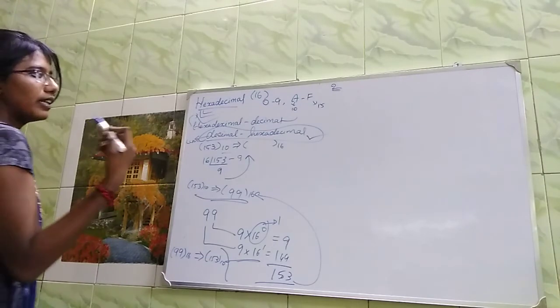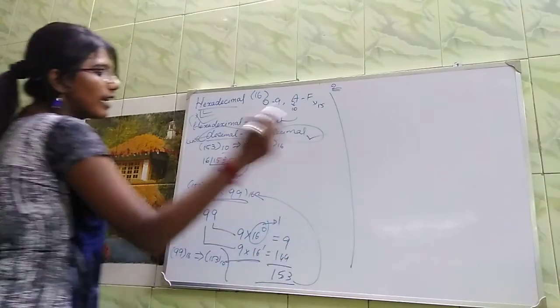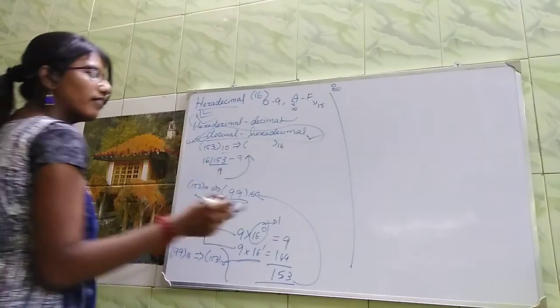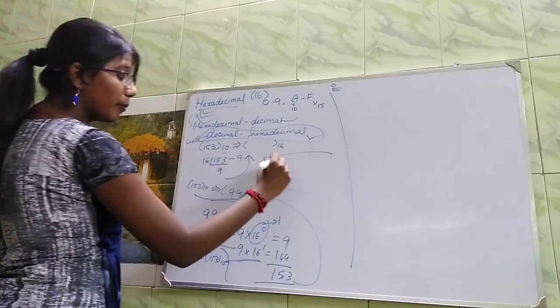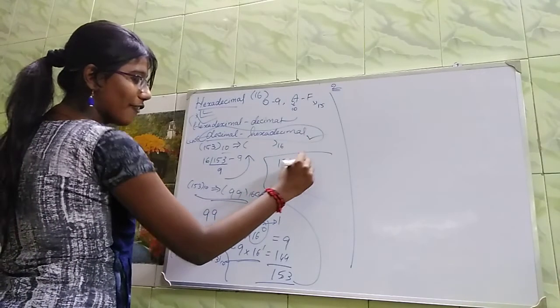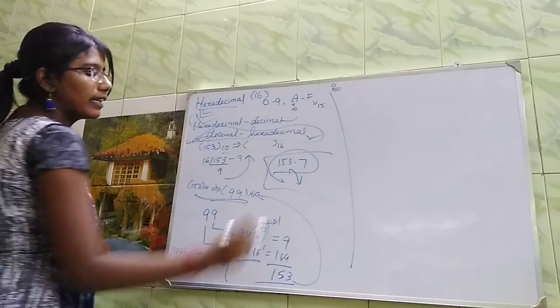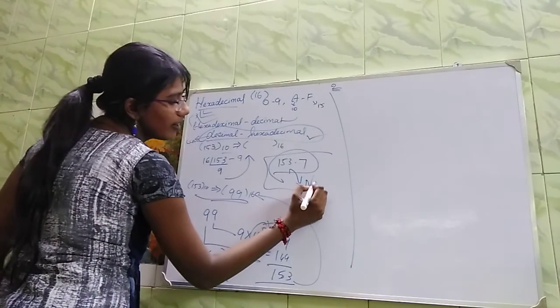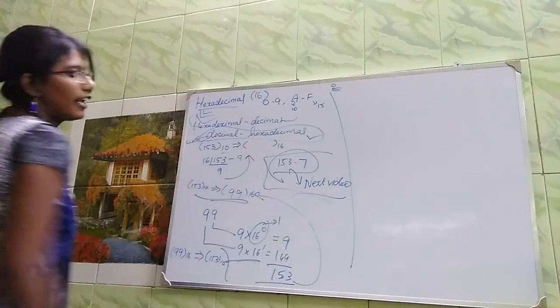This is hexadecimal-decimal conversion. 153—the difference here is if there's a point, like 153 point 7, this point conversion I will talk to you in the next video. OK guys, thank you.